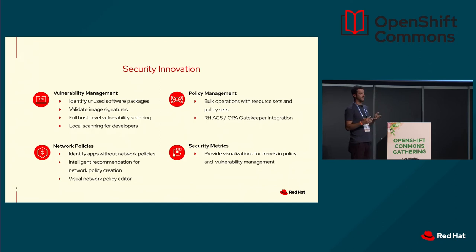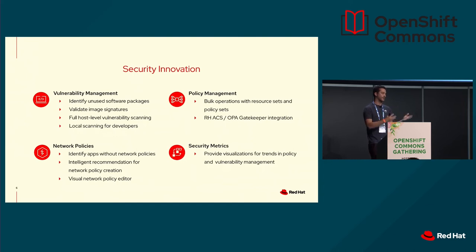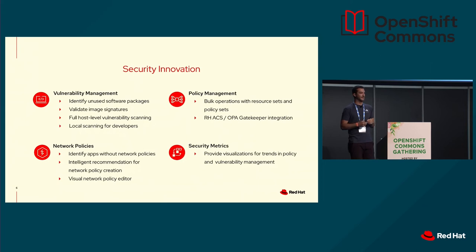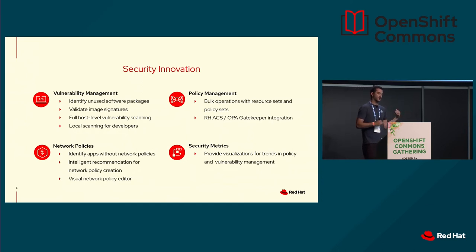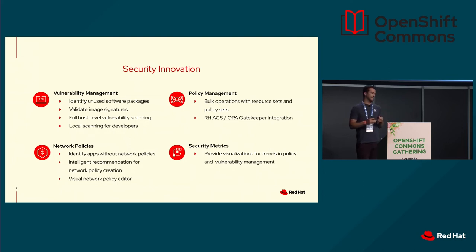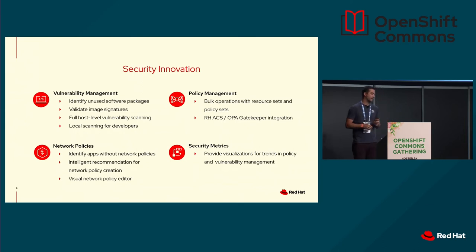From the network policy perspective — Kirsten also talked about these briefly — it's really about how we can help people leverage network policies. I think adoption of network policies has been a little low. Four years ago I was trying to build a network policy and thought, this is really hard. How can we make this easier? The next changes we're trying to make are around identifying applications that don't have network policies applied to them, and identifying things that aren't properly attributed via Kubernetes labels — which are easy to get wrong.